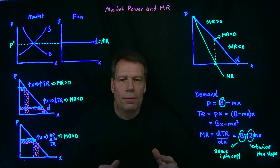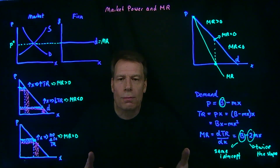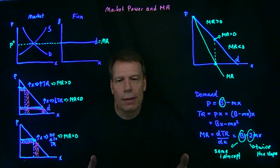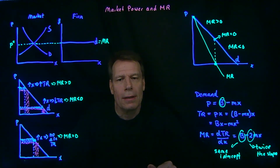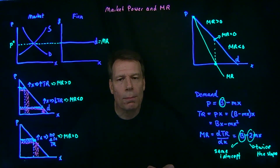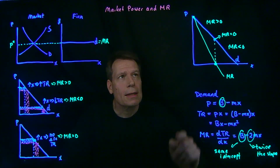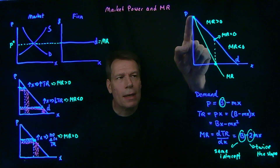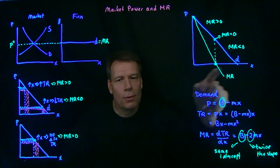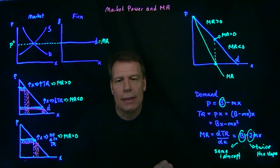So now we have an idea of what marginal revenue looks like for a firm with market power. It's not equal to the demand curve, as it was for a perfectly competitive firm. Rather, it starts at the same intercept and has twice the slope when the demand curve is linear and downward sloping.